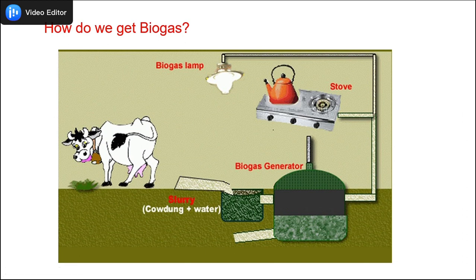How do we get biogas? Biogas is a gas produced by the fermentation of organic matter like manure, sewage, cattle dung, municipal waste, leaves of plants, vegetable peels, etc. This waste is mixed with water — called a slurry — and it is poured into a pit. From here it passes through a pipe into the biogas generator. The gas gets generated and is supplied through pipes to households where it is used for cooking and also for lighting biogas lamps. The waste left after generation of gas is an excellent fertilizer for crops. Thus, biogas is an excellent renewable source of energy.